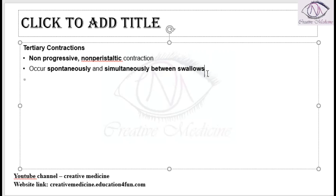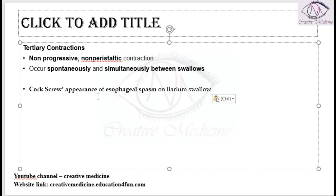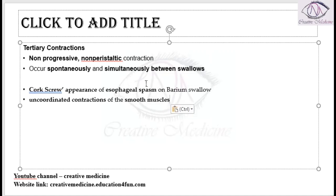Tertiary contractions are responsible for the corkscrew appearance seen in diffuse esophageal spasm. On barium swallow, we see this corkscrew appearance, which is mainly due to uncoordinated smooth muscle contractions — these are the tertiary contractions.